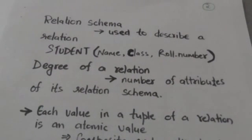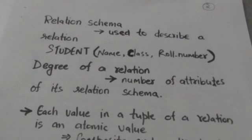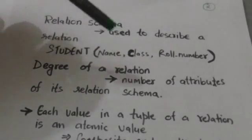Next is relation schema. A relation schema is used to describe a relation. A relation schema is made up of a relation name and list of attributes. For example, see this relation schema.